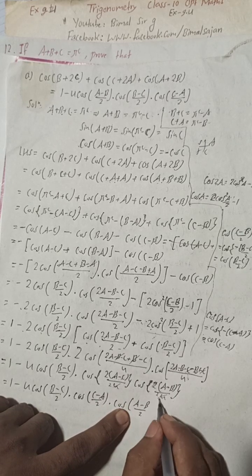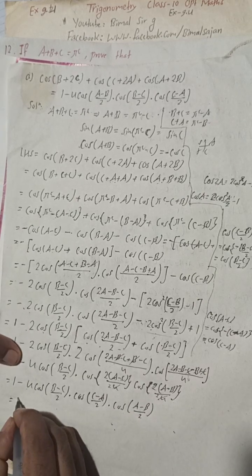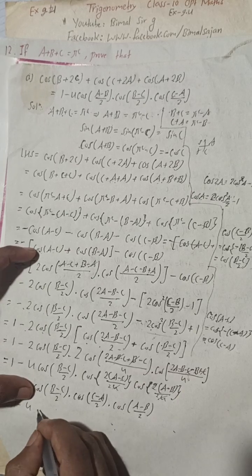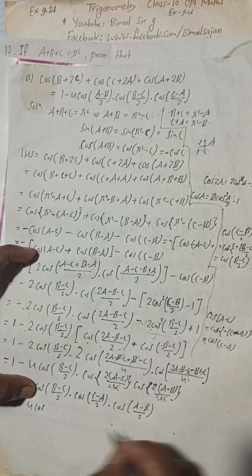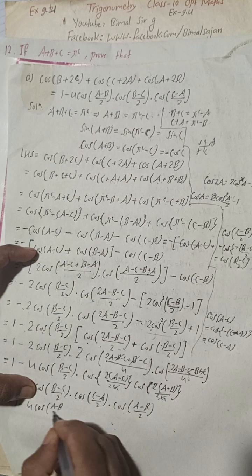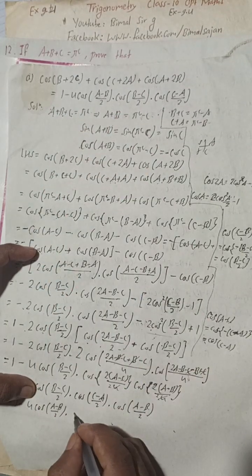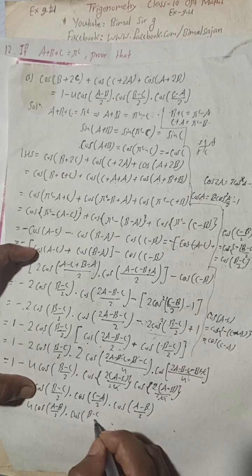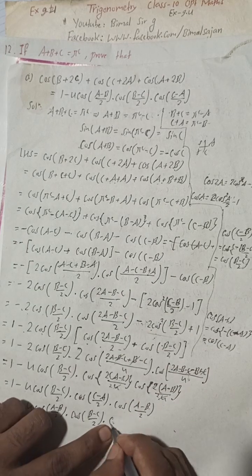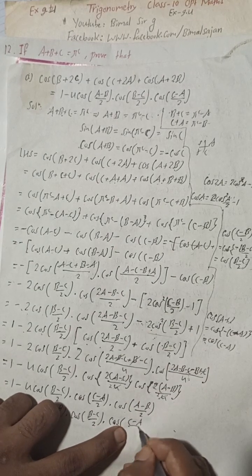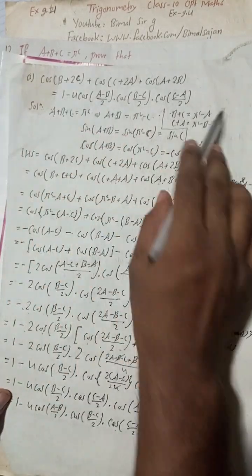Therefore the final answer is 1 − 4cos((a−b)/2) · cos((b−c)/2) · cos((c−a)/2), which equals the RHS. Hence proved. This is the complete solution of question 12a.